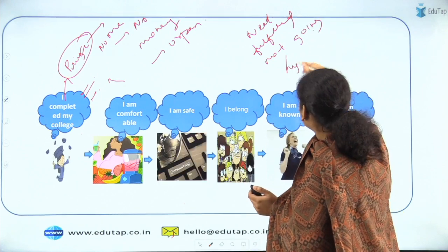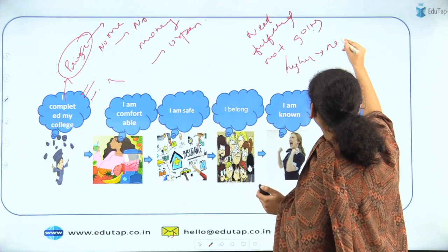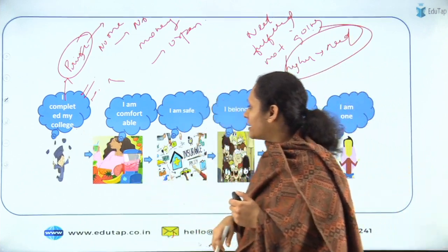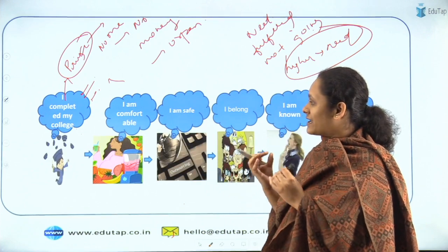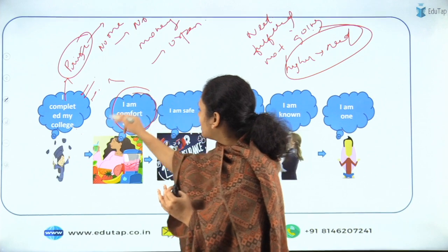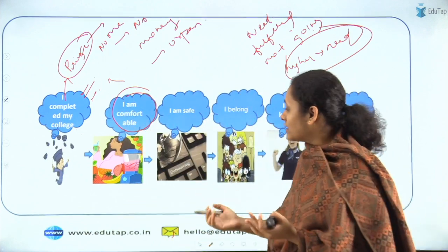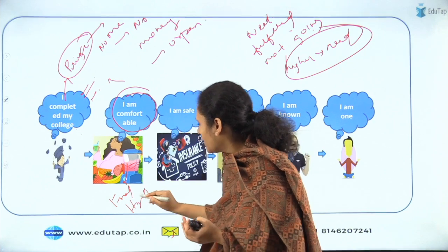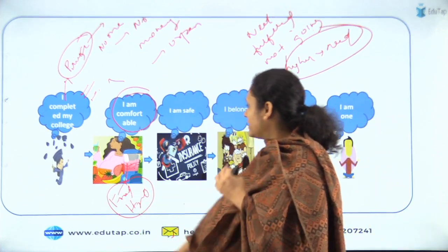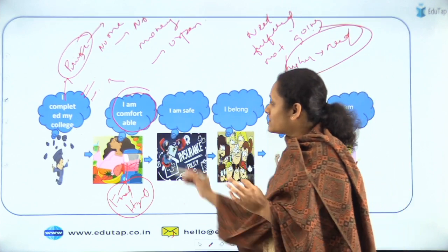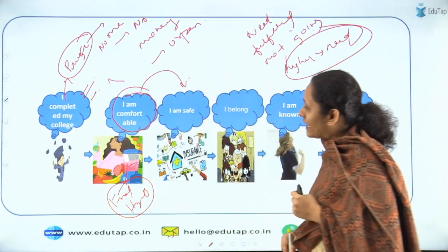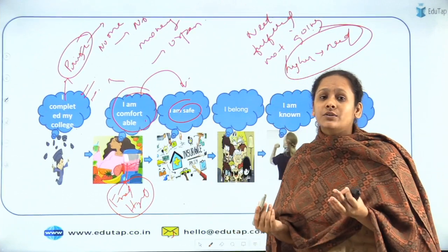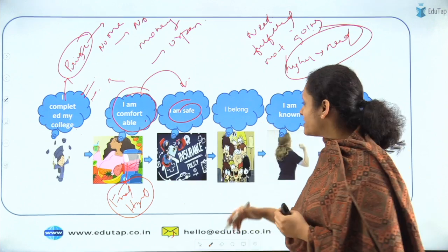In this example, she completes her graduation. Now she wants to meet her psychological needs — she wants food and water. Let's say she achieves all this. The next step is that she wants to feel safe. She takes insurance, or she wants to get a secure job — she wants a guarantee. That is the process of feeling safe.